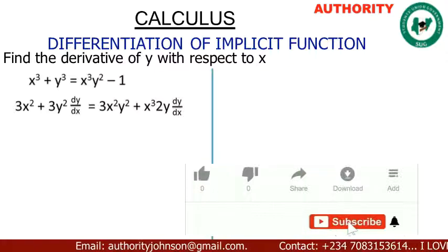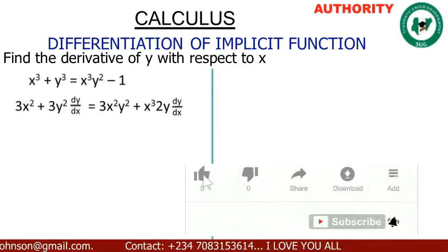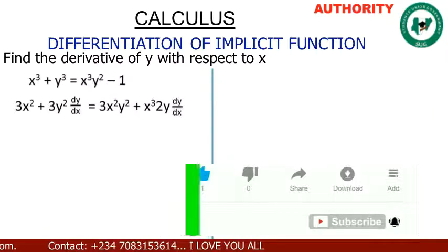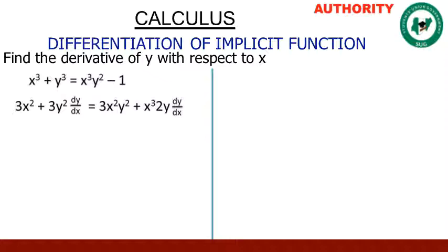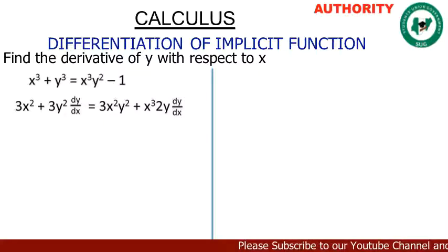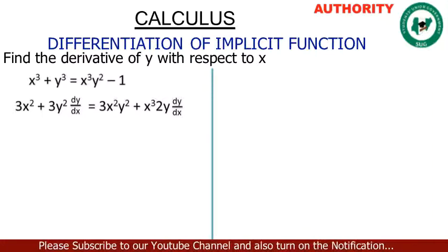On the right side, we have s³y² — two variables joined by multiplication — so we're going to apply the product rule here. The derivative of s³ gives us 3s², then times y².